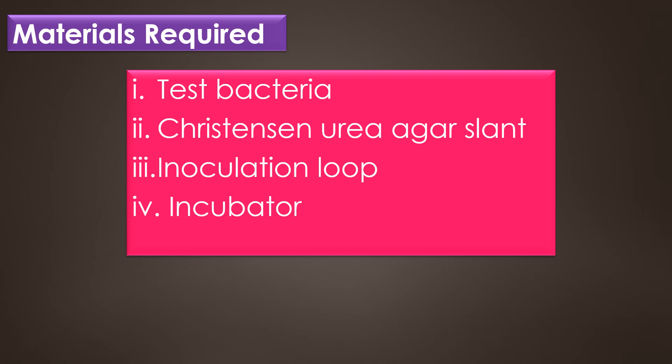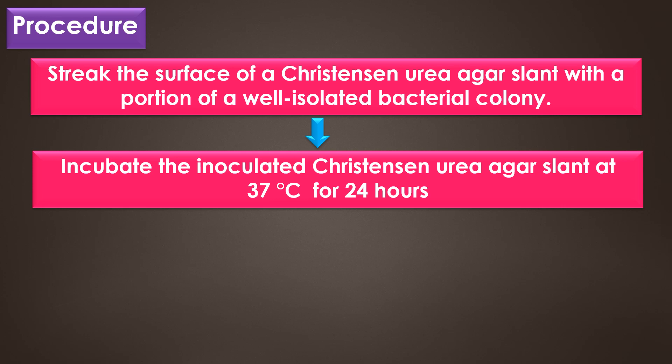The materials required for the urease test are: test bacteria, Christensen urea agar slant, inoculation loop, and incubator. Procedure: streak the surface of a Christensen urea agar slant with a portion of a well-isolated bacterial colony, and incubate the inoculated Christensen urea agar slant at 37 degrees Celsius for 24 hours in an incubator.